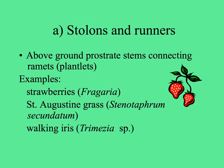The first type of vegetative reproduction is stolons and runners — above-ground prostrate stems lying on the surface of the ground that connect little plantlets, which are ramets of the same genet, that is, genetically identical pieces of the same genetic individual attached by these stolons. You might see a strawberry plant with a runner that makes other little plants along it. St. Augustine grass and walking iris also spread with little plantlets on runners in this way.